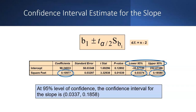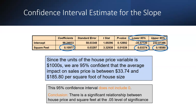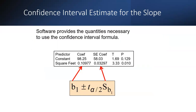At the 95% level of confidence, the confidence interval for the slope gives threshold values. Since the unit of the house variable is 1,000, we are 95% confident that the average impact on the sales price is between $33 and $185 per square foot of house size. This 95% confidence interval does not include zero, indicating a significant relationship between house price and square footage.